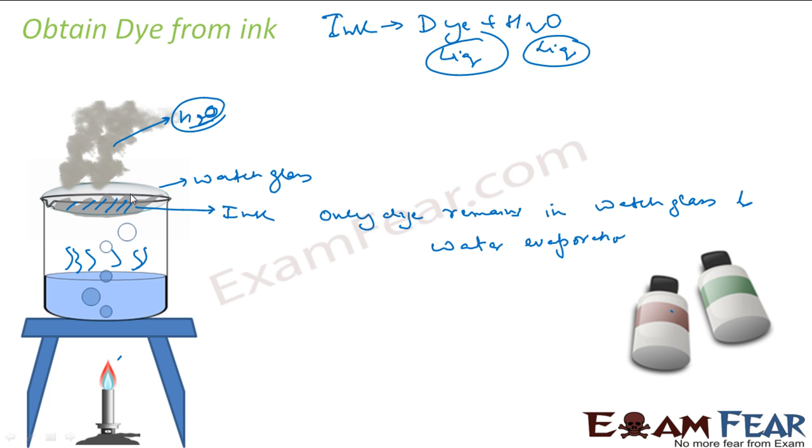But actually I am not trying to confuse you. Ink itself is again a mixture of different colors. We will see how to separate this. But first we have separated ink from this water. Ink is again one component. And then we will see one process where we will actually separate this.